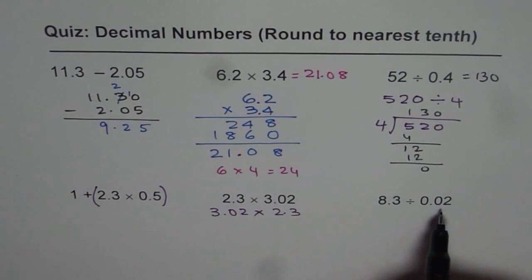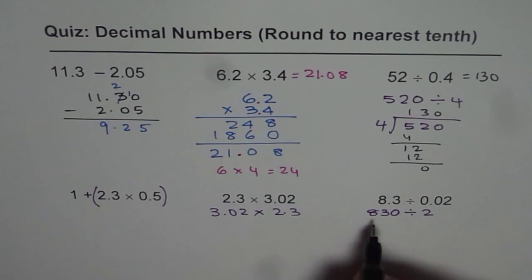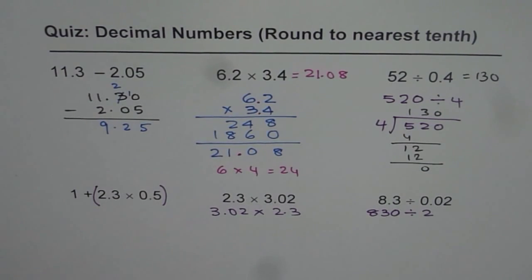In this case, you are dividing by 0.02. The strategy is to avoid decimals in the divisor. So you have to multiply by 100. So it really becomes 830 divided by 2. So that is how you should be doing this. I hope it is absolutely clear. Thank you and all the best.